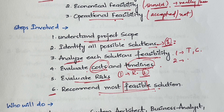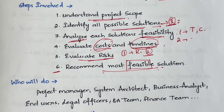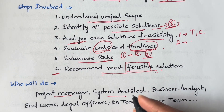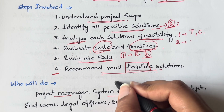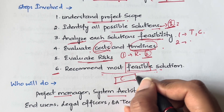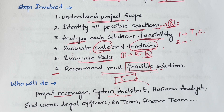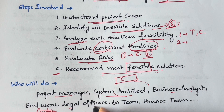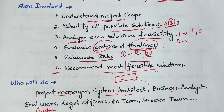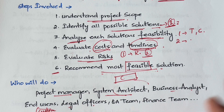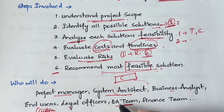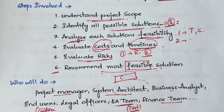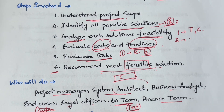Almost everybody involved in the project participates in the feasibility study: the project manager, the system architect (who defines the high-level technical architecture — front end, back end, etc.), the business analyst, end users (i.e., the customers), the legal team (who check legal compliance), the QA team (the testing team), and the financial team.